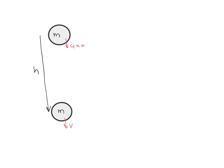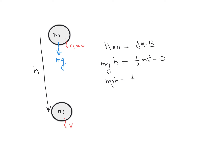Using Work-Energy Theorem with W_all = ΔKE: the only force acting on the object is gravity, mg, in the downward direction. Work done by gravity is m × g × h. Setting this equal to change in kinetic energy: mgh = ½mv² − 0, so mgh = ½mv².